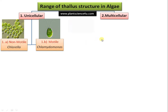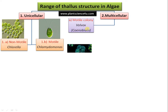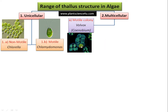The second group is multicellular. Unicellular forms can aggregate into colonies. The classical example is Volvox — it's a motile colony, extremely beautiful and called the dancing algae under the microscope. The organization is called a coenobium, where the colony has a definite number of cells, a definite shape, and even division of labor. Peripheral cells are involved in locomotion while central cells are involved in reproduction.